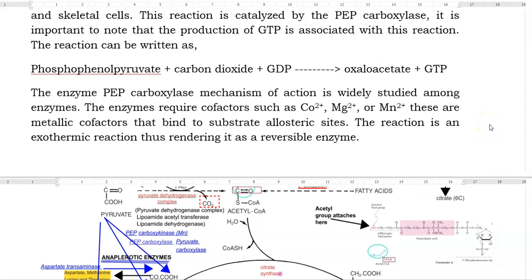The enzyme PEP carboxylase mechanism of action is widely studied among different groups of enzymes. It requires co-factors such as cobalt, magnesium and manganese for its activity. These metallic co-factors are binding to the substrate's allosteric sites. And the reaction performed here is an exothermic reaction thus rendering it as a reversible enzyme in the process.